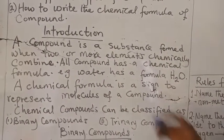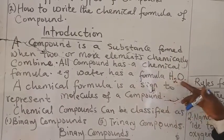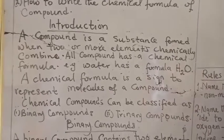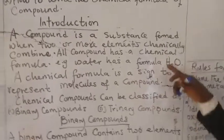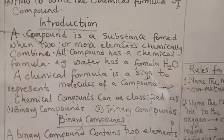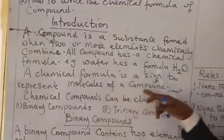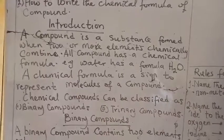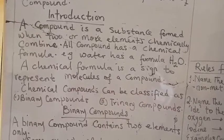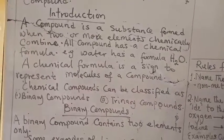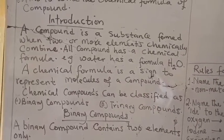For example, water, as you all know, has a formula H2O. And as you can see, water is a combination of two elements, hydrogen and oxygen. A chemical formula is a sign to represent molecules of a compound. We represent a compound using the chemical formula.